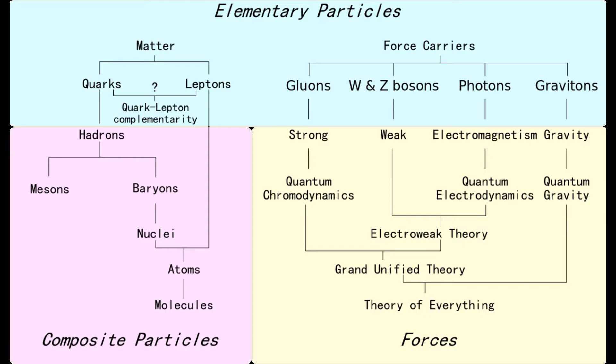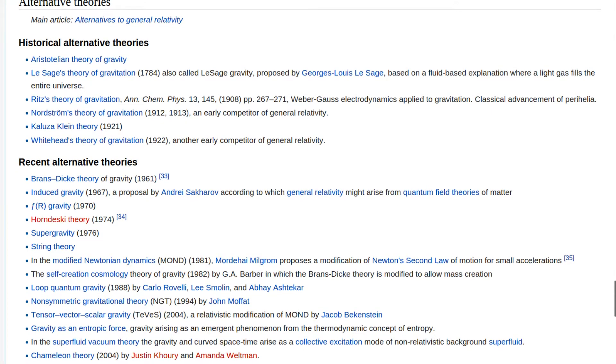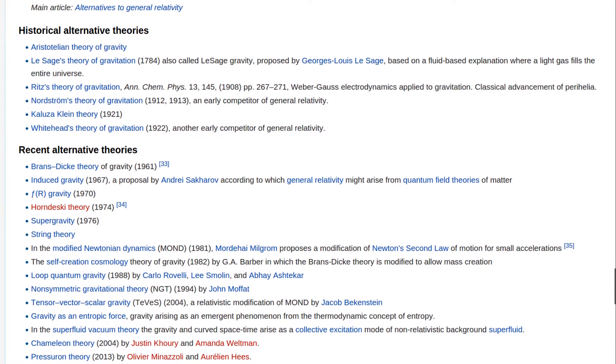The other three forces have particles associated with them: gluons, photons and bosons. But we've never observed a graviton, or any evidence of its existence. This has led to a plethora of hypotheses to try and explain gravity.